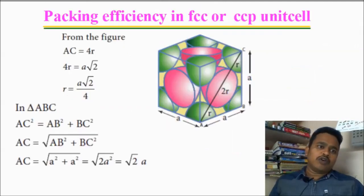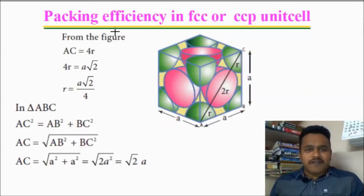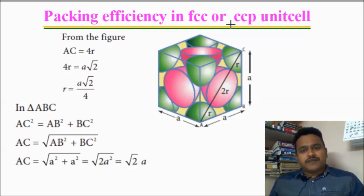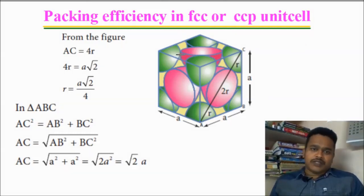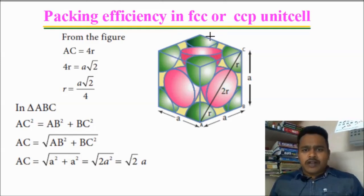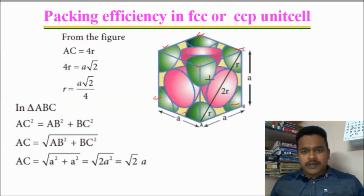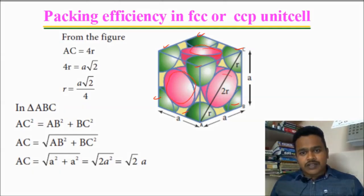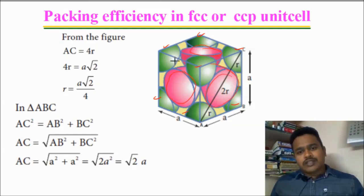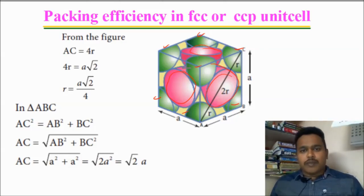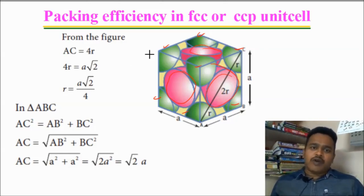Now we will go to the lecture. Packing efficiency, otherwise packing fraction, in FCC or CCP unit cell. This is FCC — face-centered. All the corners can be occupied by the spheres. We need a relation between R and A.